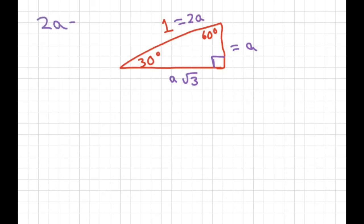We have 2A equals 1, so A equals 1 half. Then you plug in 1 half, so you have 1 half times the square root of 3, which equals square root of 3 over 2.